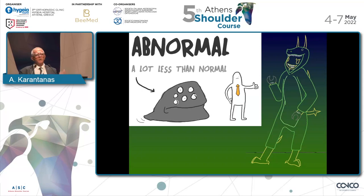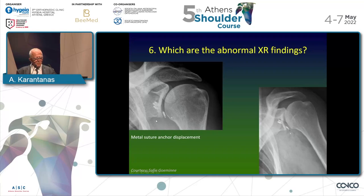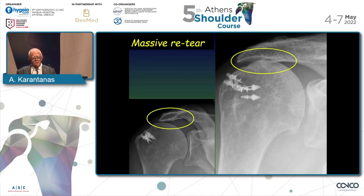Now let's move to the truly abnormal findings. On X-rays we don't have many abnormalities, but we may see displacement of anchors — here one is in the inferior joint space. A displaced anchor may cause significant erosions in the articular cartilage. We may also see intact anchors in the humeral head but almost zero distance between the acromion and the humeral head, suggesting a massive retear. There isn't much more we can do with plain X-rays.